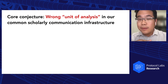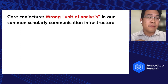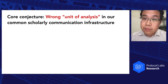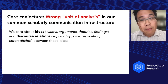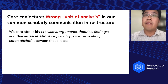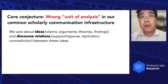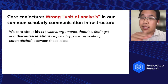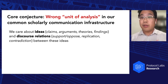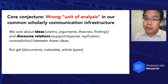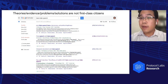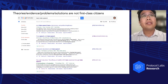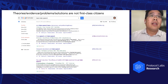Why does Google Scholar work that way? Why is it indexing papers? What is the data structure that it's operating on? When you go search for papers, you're looking for papers, but really what you care about is what's in them — the ideas, the claims, the arguments, the theories, the findings, and the discourse relations between them: support, opposition, replication, lines of evidence, lines of contradiction. These are what you actually care about. Instead, you get documents, metadata, and article types.